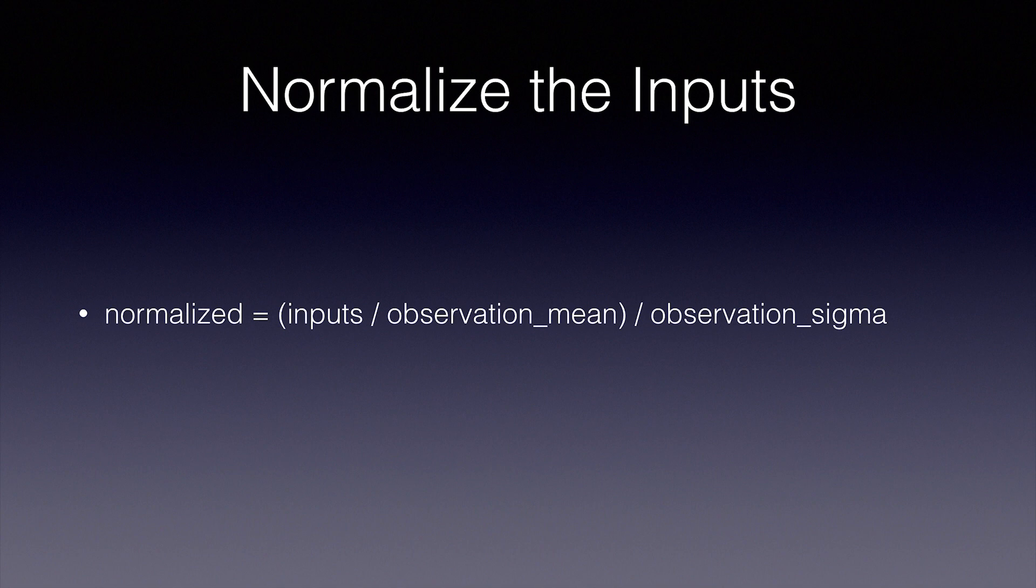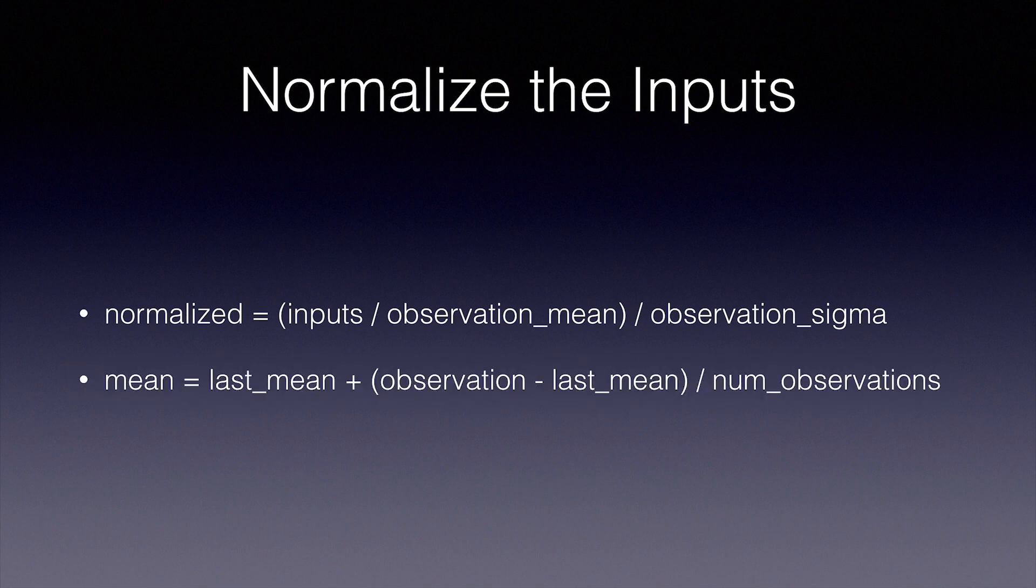Sigma simply means standard deviation. And if you don't fully understand the concepts of standard deviation and variation, there's a link below for further study. In order to track the mean, we're going to keep a running average. So the running average is the last mean plus the current observation minus the last mean divided by the total number of observations we've taken so far.